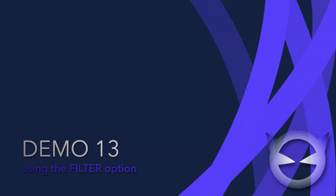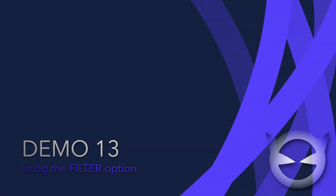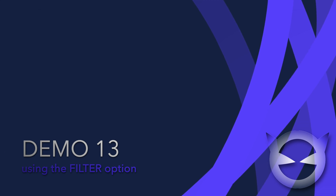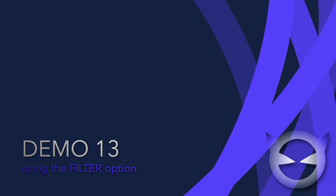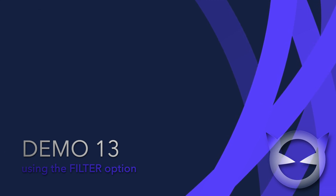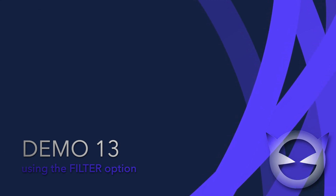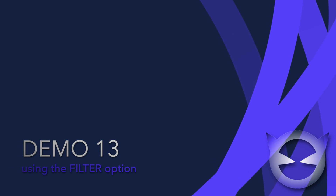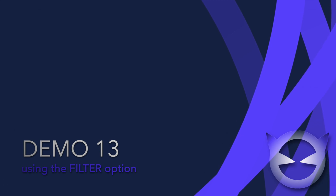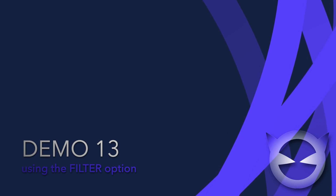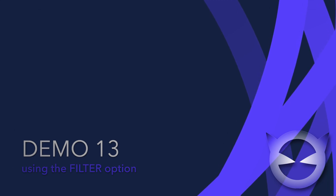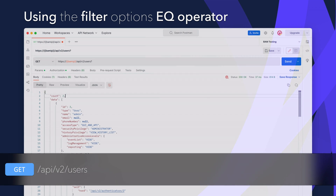The RESTful API supports results filtering using the filter query parameter. This is one of the most powerful features of the new API. It allows for extremely granular selection of resources based upon the fields in the response. The value supplied to the filter parameter is a list of field predicates using the API's filter grammar.